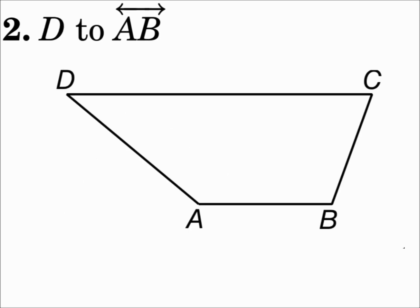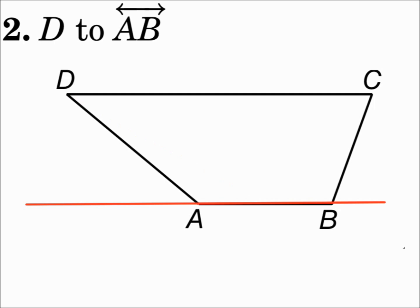Number 2: From point D to line AB. If I try it inside the shape, it won't work because I can't hit that at a right angle. So instead, I'm going to have to extend line AB. Once you extend the line, draw from point D to the line. That makes a right angle — that distance is perpendicular to line AB.